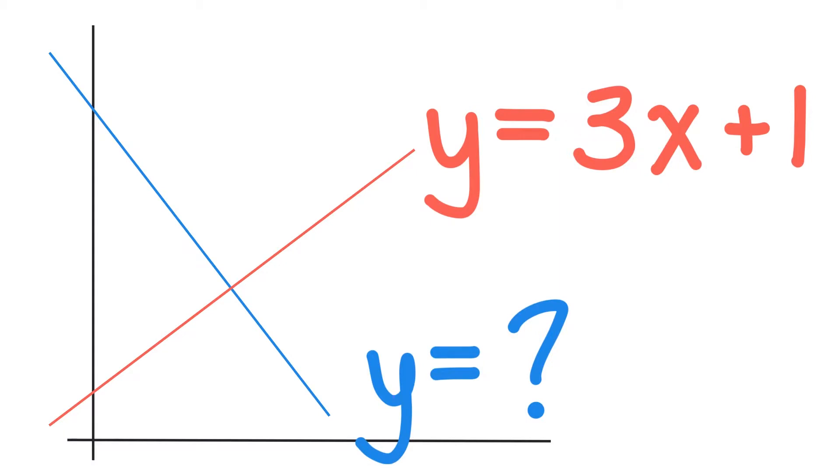We can use that equation to solve a question like this. The red line has the formula y = 3x + 1, and the blue line is perpendicular to the red line. We know it's perpendicular because all angles at their intersection are 90 degrees, but we don't know the equation of the blue line.